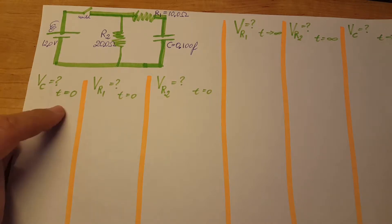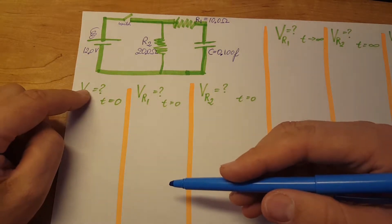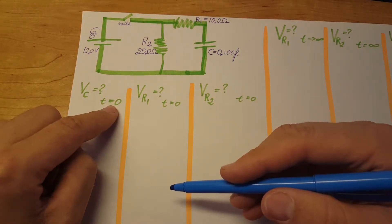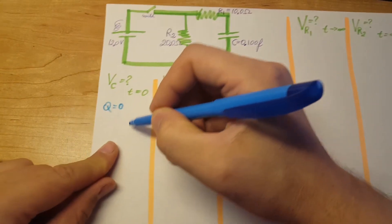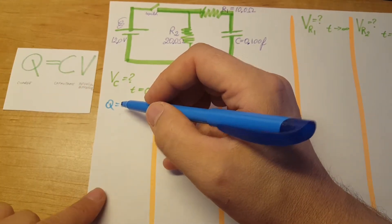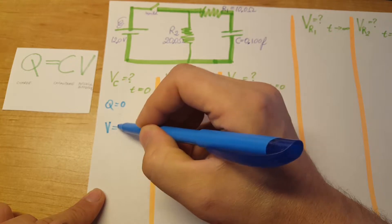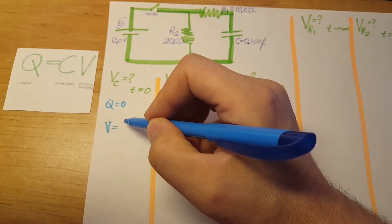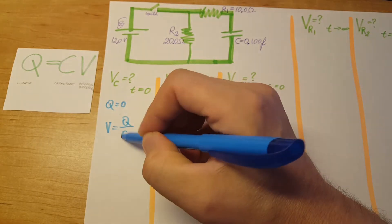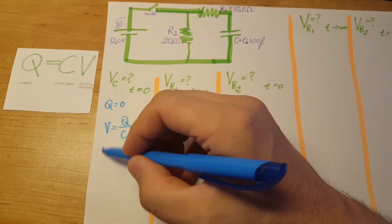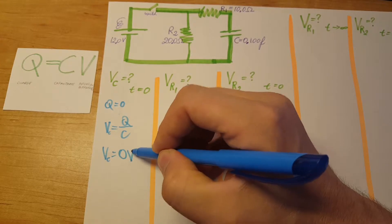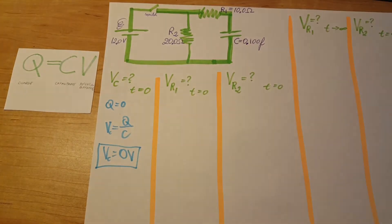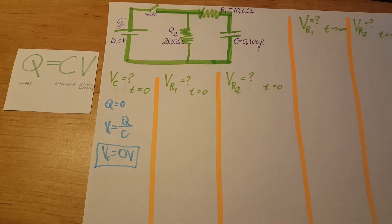Part A: voltage on the capacitor at T=0. The capacitor is uncharged at T=0, therefore Q equals zero. Using the formula V = Q/C, since Q is zero, the voltage on the capacitor will be zero volts.